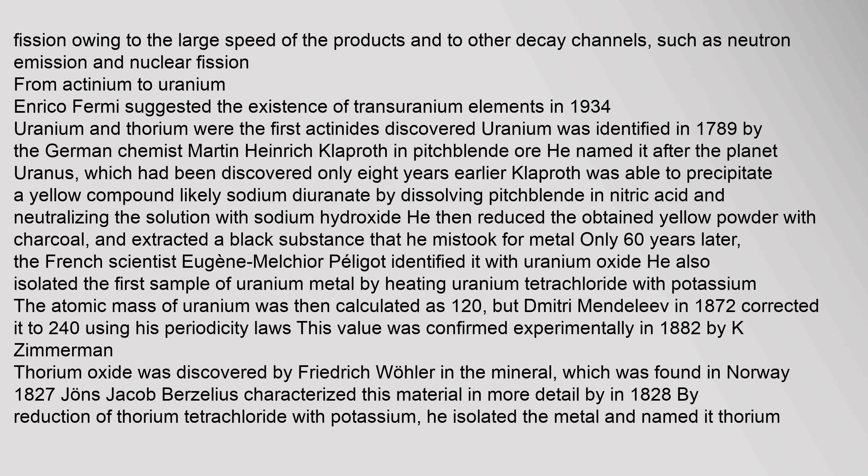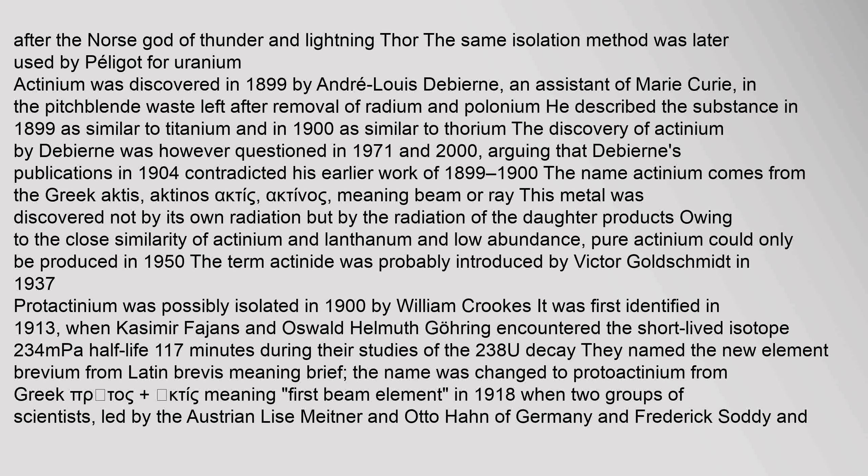Only 60 years later, the French scientist Eugène-Melchior Péligot identified it as uranium oxide and isolated the first sample of uranium metal by heating uranium tetrachloride with potassium. The atomic mass of uranium was calculated as 120, but Dmitri Mendeleev in 1872 corrected it to 240 using his periodicity laws, confirmed experimentally in 1882. Thorium oxide was discovered by Friedrich Wöhler in 1827, and characterized in detail in 1828 by Jöns Jacob Berzelius, who isolated the metal by reduction of thorium tetrachloride with potassium and named it after Thor, the Norse god of thunder.